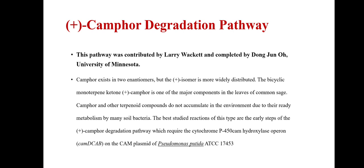Terpenoids are a class of naturally occurring organic chemical compounds. They defend many species of plants and animals against pathogens. The bicyclic monoterpene ketone (+)-camphor is one of the major compounds in the leaves of common sage, which is an aromatic plant.